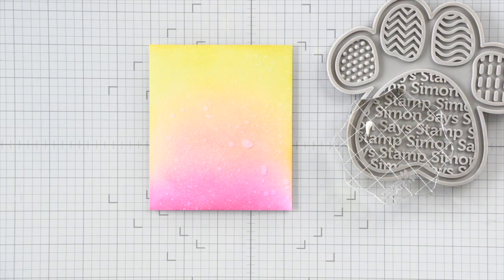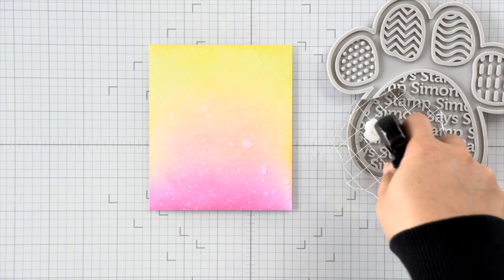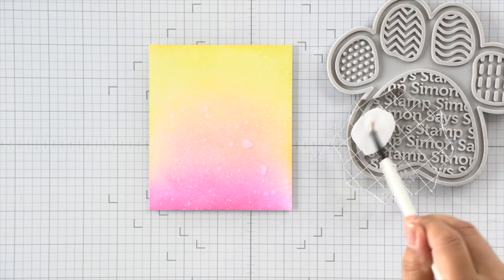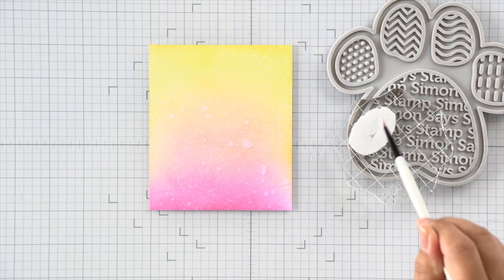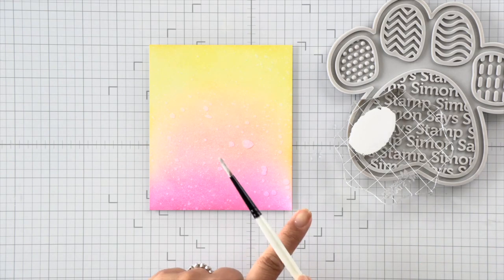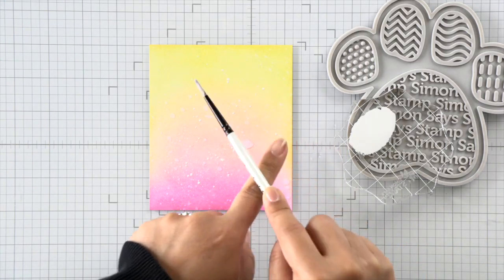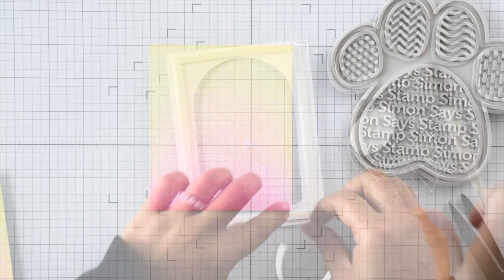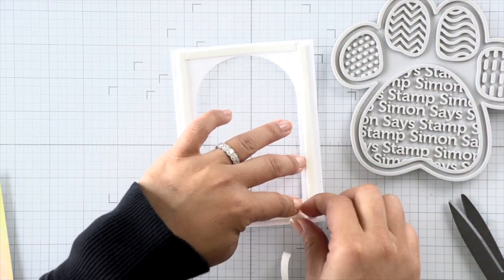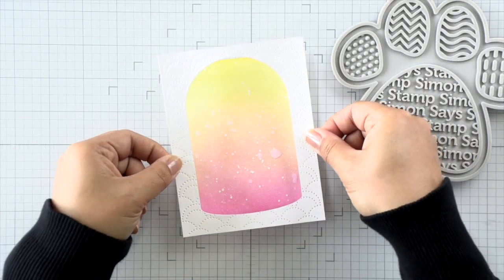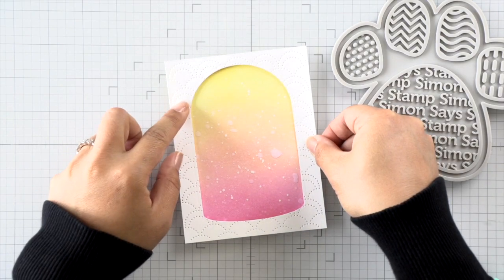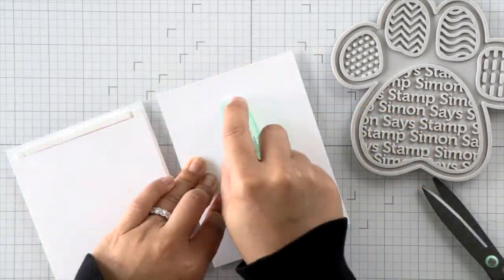Then I'll spritz it with some water to give it some texture and then I'm going to also splatter it with some white paint. I added a drop of acrylic white paint to an acrylic block here and then added two spritzes of water to get it to the consistency that I like and then splattered my panel until I was happy. And then I set that aside while I added foam adhesive to the back of my frame and then adhered it over my ink blended panel.